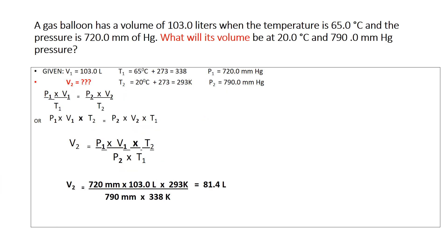Problem 1: A gas balloon has a volume of 103 liters when the temperature is 65 degrees Celsius — this is your initial volume V1 and initial temperature T1. The pressure is 720 millimeters of mercury. What will its volume be at 20 degrees Celsius, which is the final temperature T2, and 790 millimeters of mercury, which is the final pressure P2? The unknown is V2.